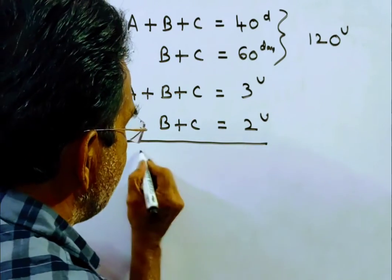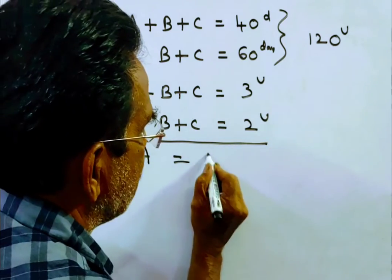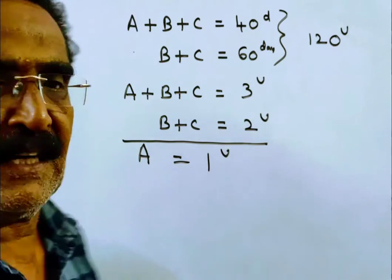So then A can do 3 minus 2, which equals 1 unit of work per day.